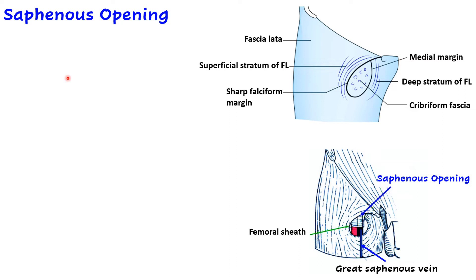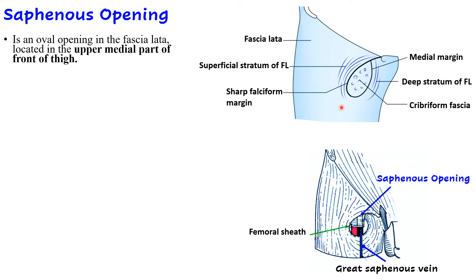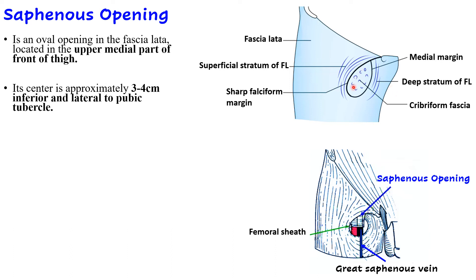The next modification is the saphenous opening. It is an oval-shaped opening in the fascia lata, located in the upper medial part of the front of the thigh. The center of the saphenous opening is 3 to 4 centimeters inferolateral to the pubic tubercle.